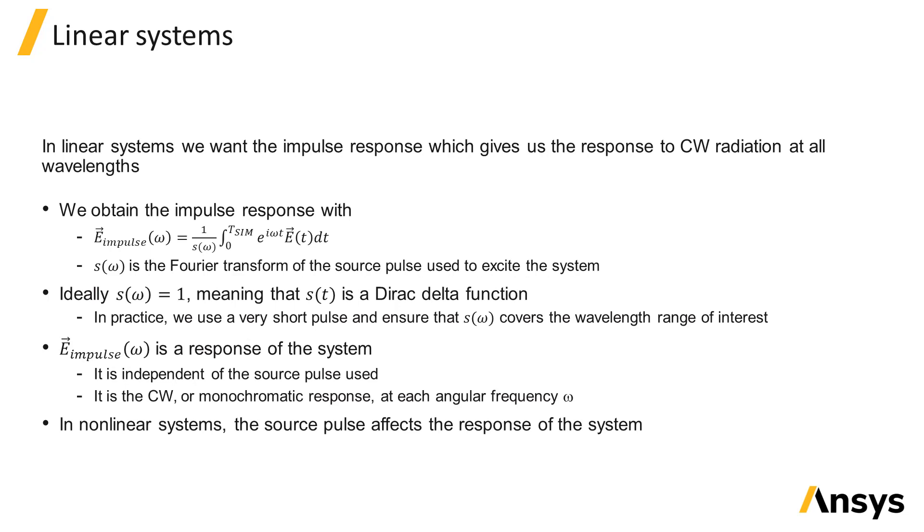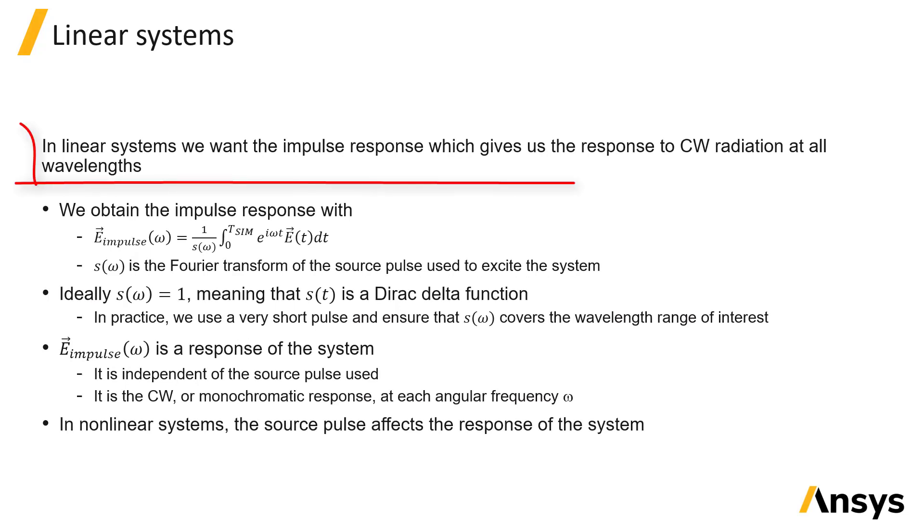In linear systems, it is most interesting to obtain the impulse response of the system because this gives us the response to continuous wave radiation at all wavelengths in a single simulation. We can obtain the impulse response by normalizing the Fourier transform of the fields to the Fourier transform of the source pulse, which we will call S, that was used to excite the system.